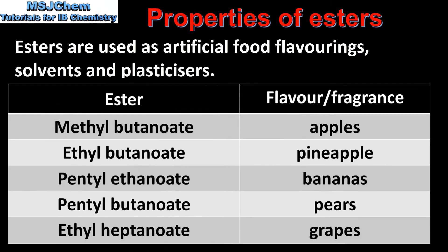We'll end the video by looking at the uses of esters. Esters are used as artificial food flavourings, solvents, and plasticisers. As we can see from this table, esters often have fruity flavours or fragrances, therefore they are used as artificial food flavourings or in air fresheners.